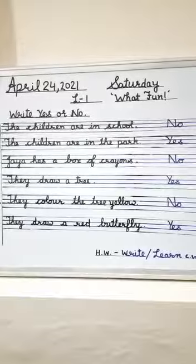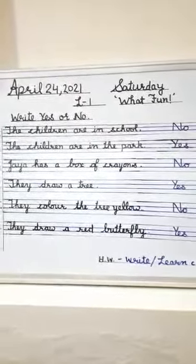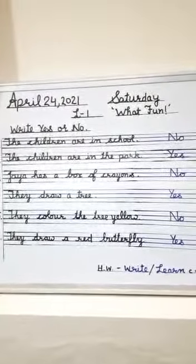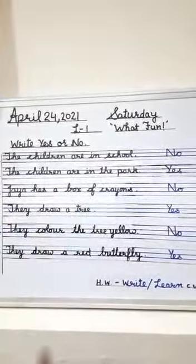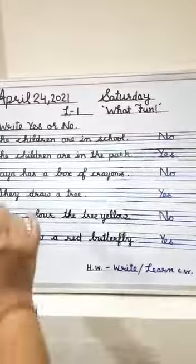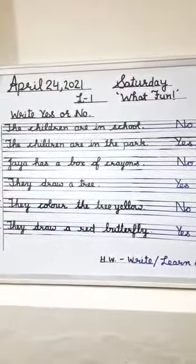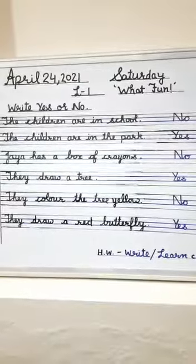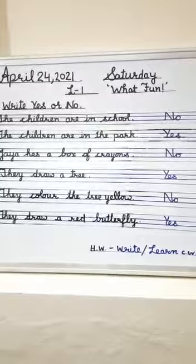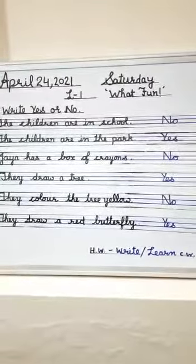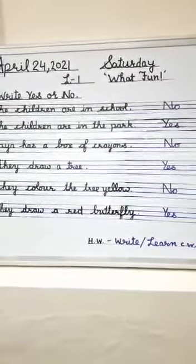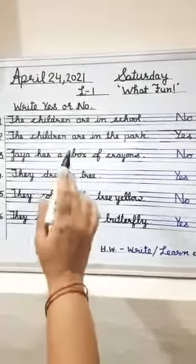If not yet, then learn them. Today we will do another exercise from this lesson which is 'write yes or no.' In this exercise some statements or lines are given. We have to write yes if it is correct and write no if it is incorrect. As you have already understood the lesson, you are able to do it. So let's start.